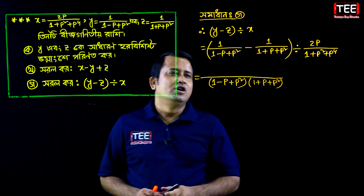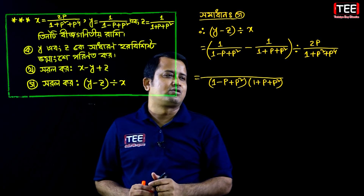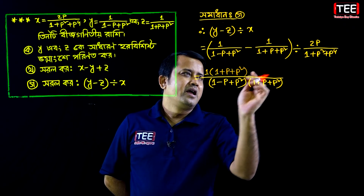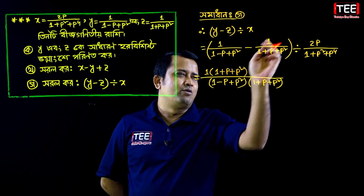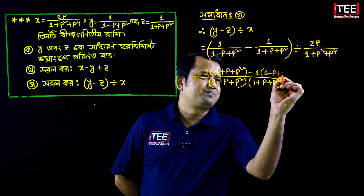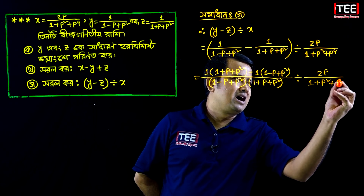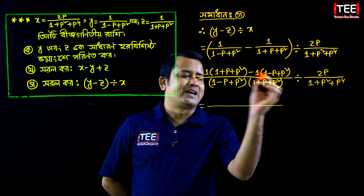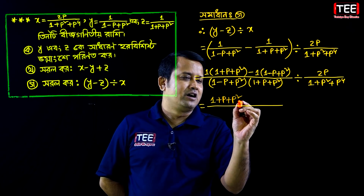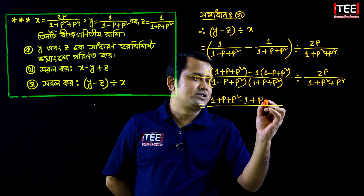Ekhon dekho: the band shadhalo, eta ভাગ eta — kotay bhag kotay. Tader 1 minus p plus p square. 2p, 1 plus p square plus p to the power 4. I am not going to be able to show you the bracket. 1 plus p plus p square. Minus 1 equals 1, minus 1. Minus 1 equals minus p — minus 1 plus p, minus p square.